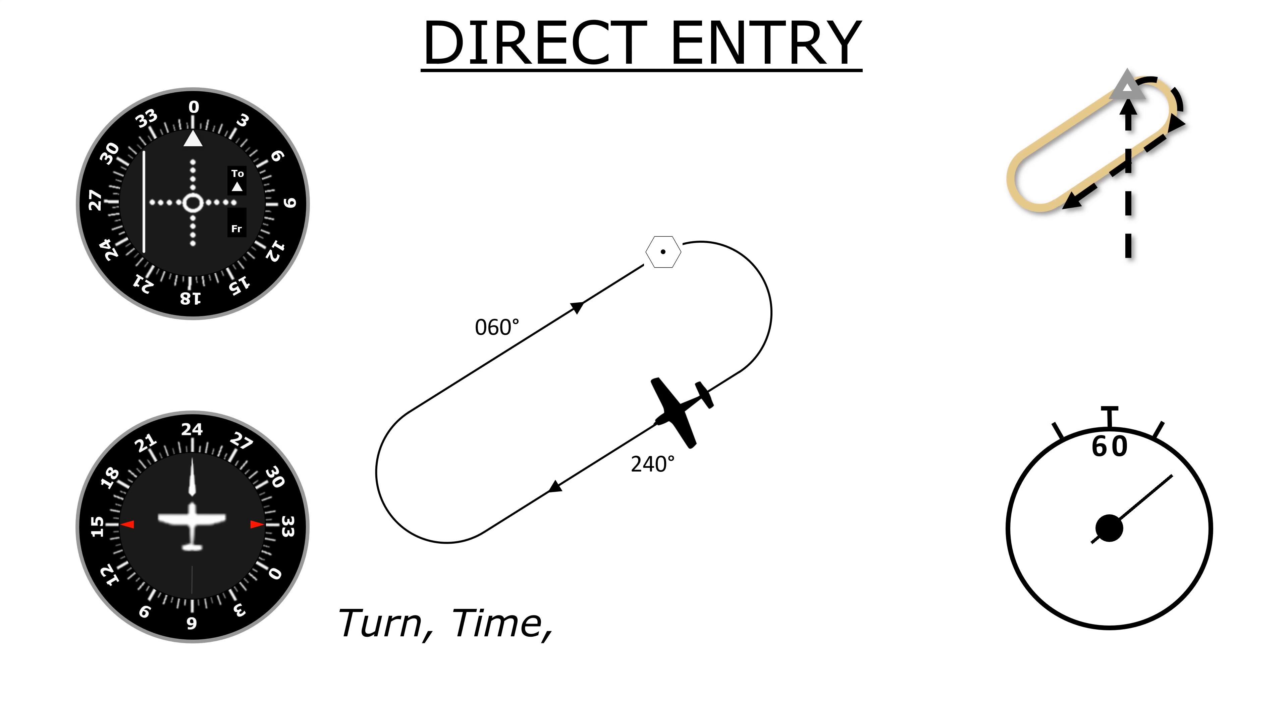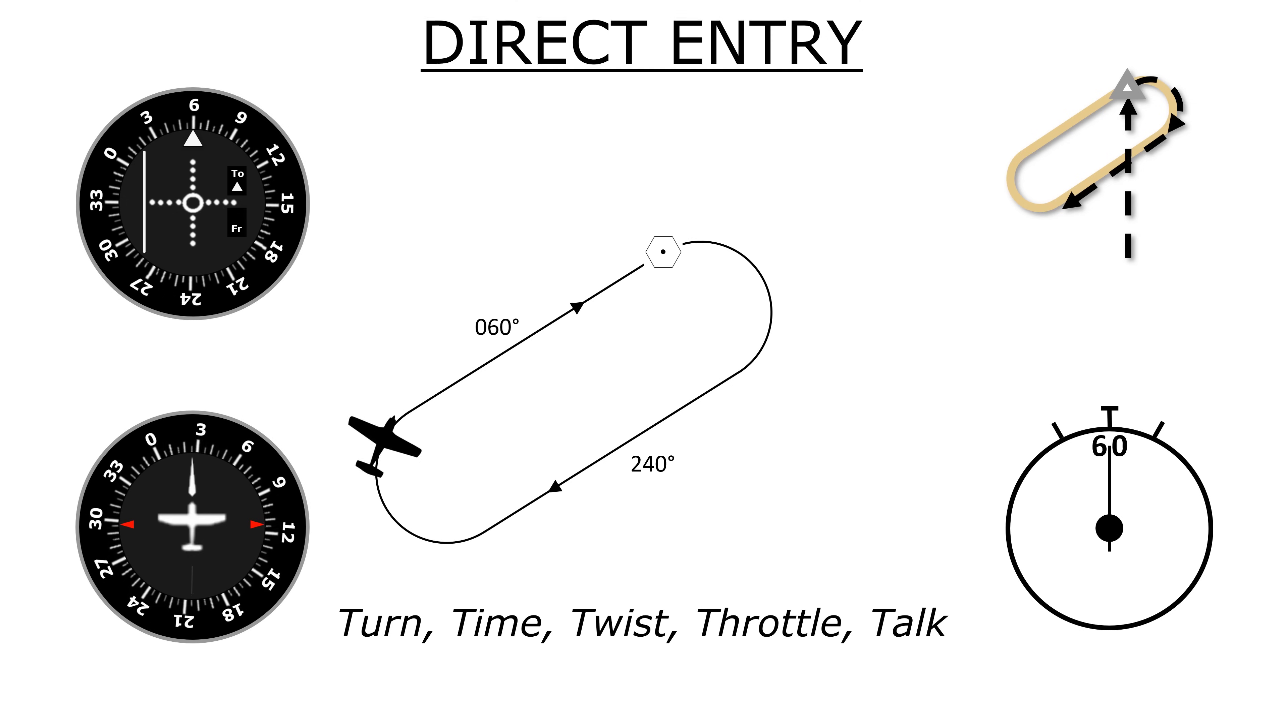We'll start to time one minute for the turn. We'll twist the VOR to our inbound course of 060. The other two T's are throttle, where we'd adjust our speed for the hold if necessary, and talk where we'd report to ATC entering the hold. We'll ignore the last two T's for this video.